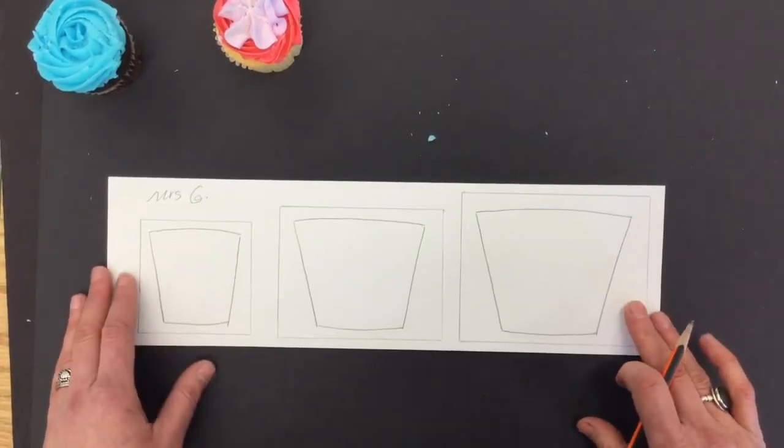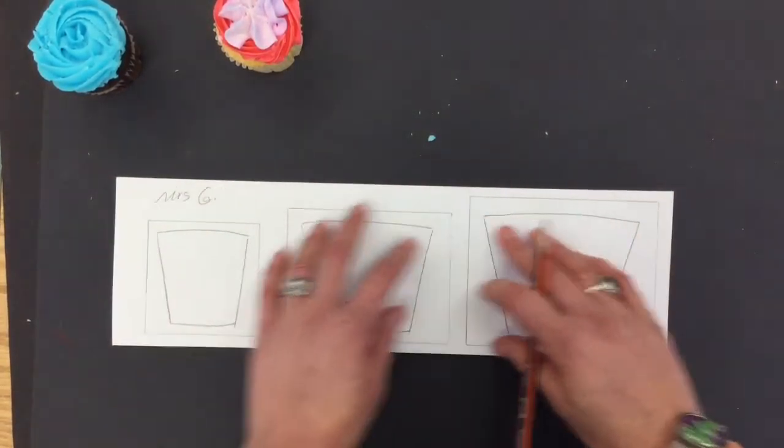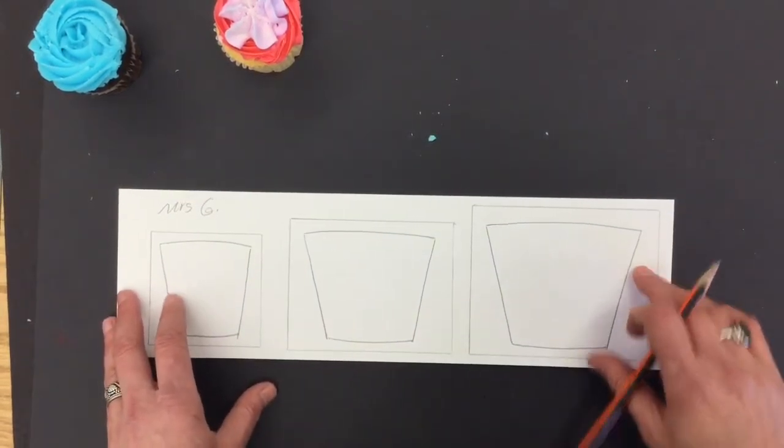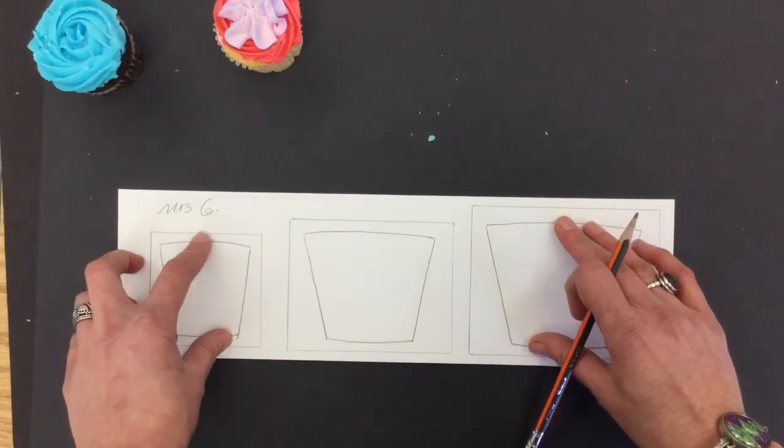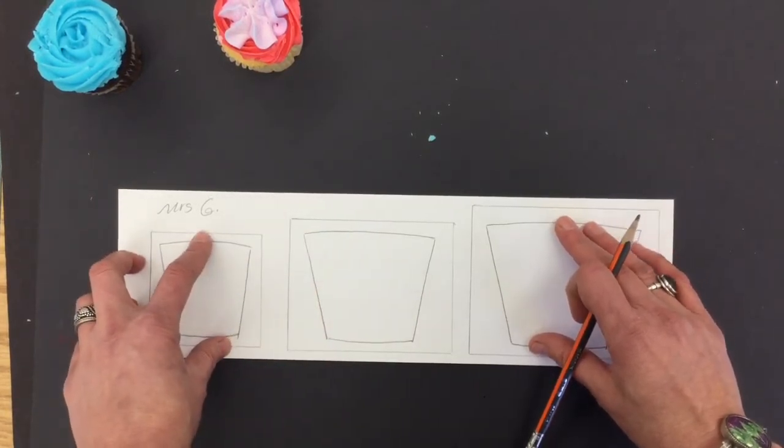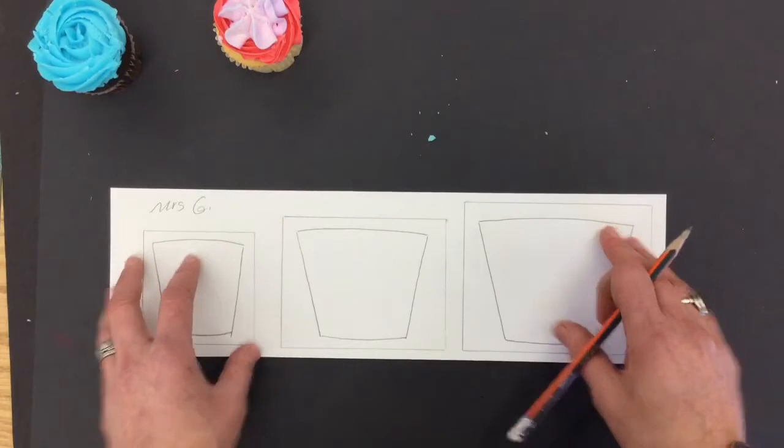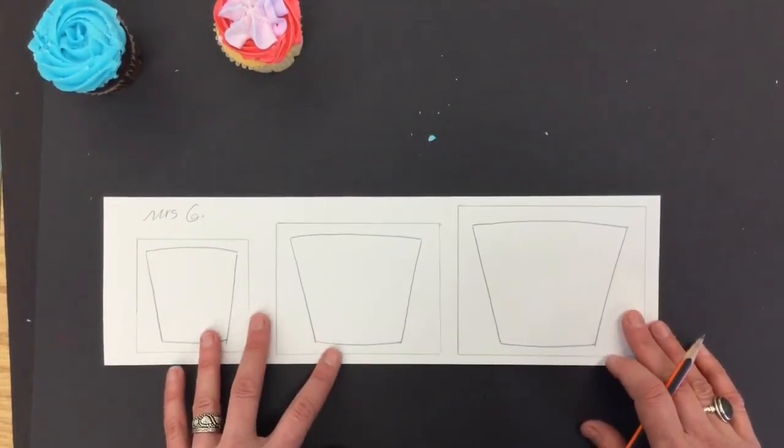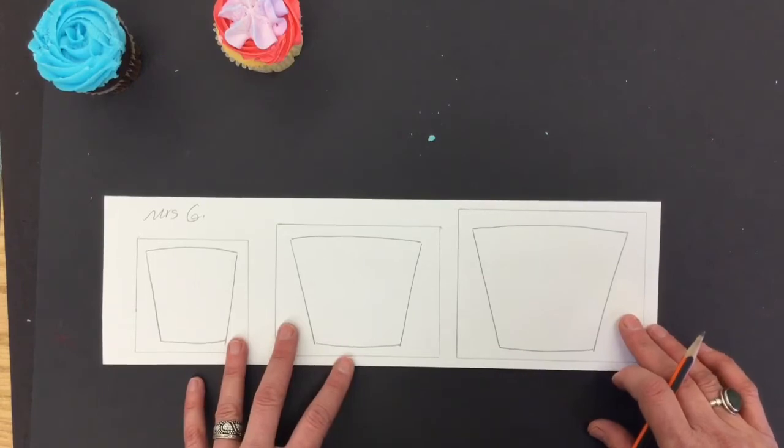Now when you have those three things finished, I want you to check with me. Take your paper, show me, and I will make sure that you have these boxes filled. If they're too small, you can guess. I'm going to send you back, erase it, make it bigger. Now when I have said okay, there is one last thing that you need to do.